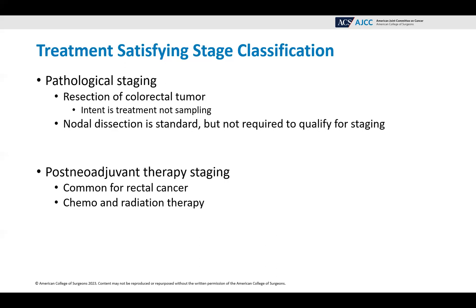For the treatment satisfying the stage classification: for pathological staging, you must have a resection of the colorectal tumor with the intent of treatment, not sampling. A nodal dissection is standard but not required to qualify for staging. Post-neoadjuvant therapy staging is very common for rectal cancer and usually consists of chemotherapy and/or radiation therapy.